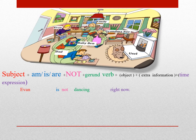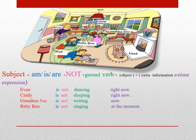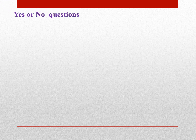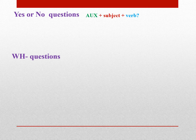For example، میخواید بگید ایوان همین الان در حال رقص نیست. Ivan is not dancing right now. و برای مثال یوسل: He's not barking right now.